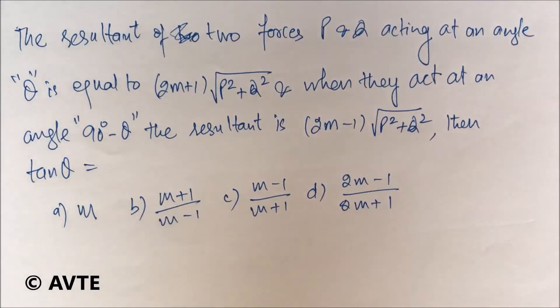The resultant of two forces P and Q acting at an angle θ is equal to (2m+1)√(P²+Q²). When they act at an angle 90°-θ, the resultant is (2m-1)√(P²+Q²).